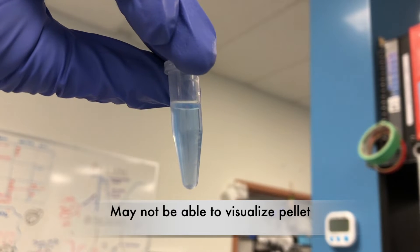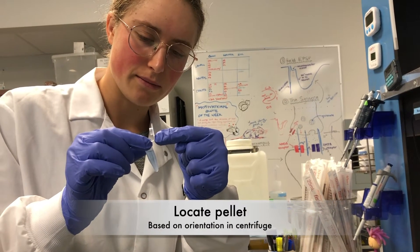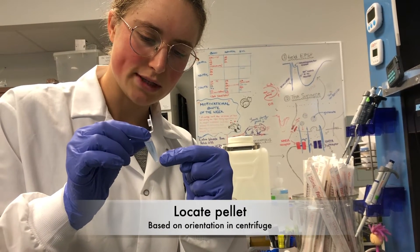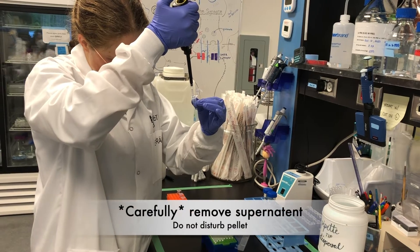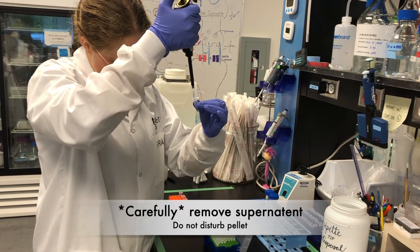You will most likely not be able to see the pellet, but will know how to locate it based on its orientation in the centrifuge. Remove the supernatant without disturbing the pellet. Be very careful.